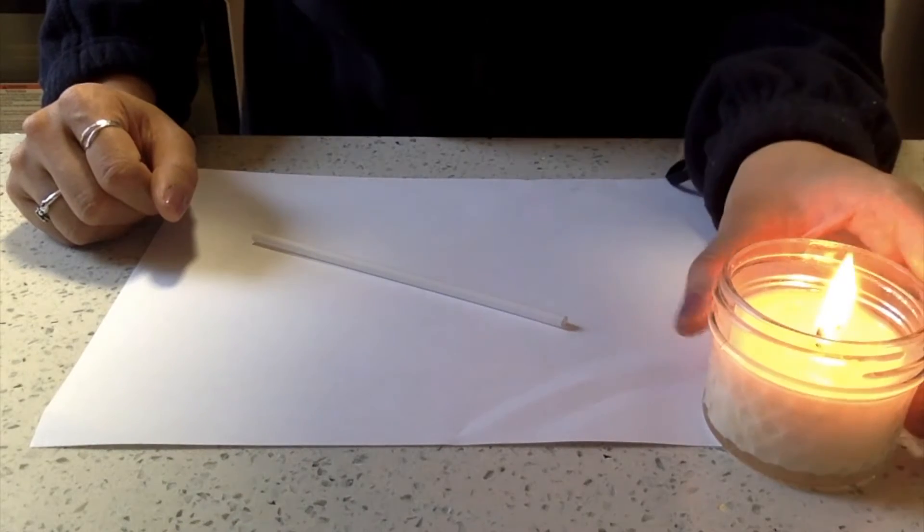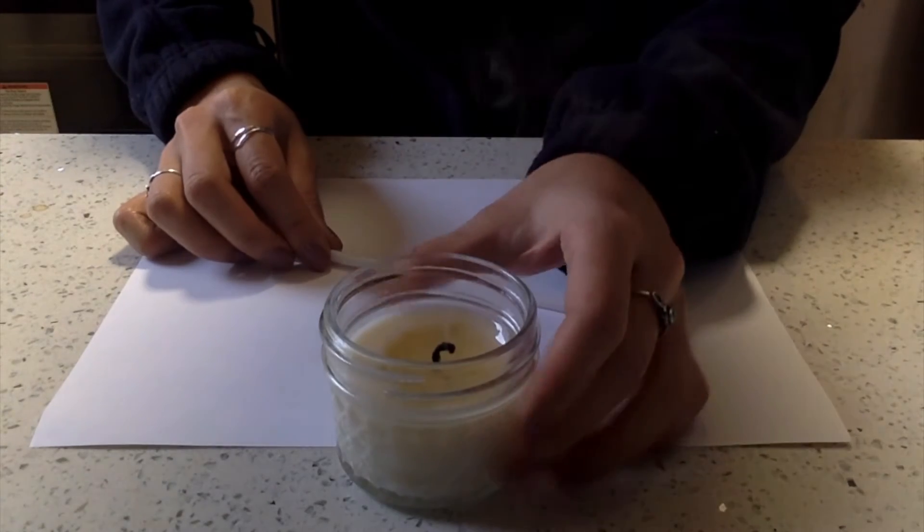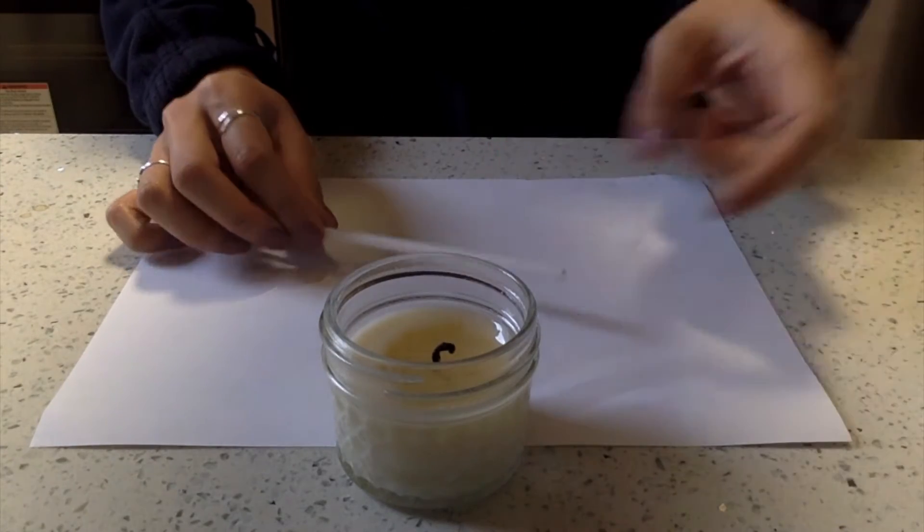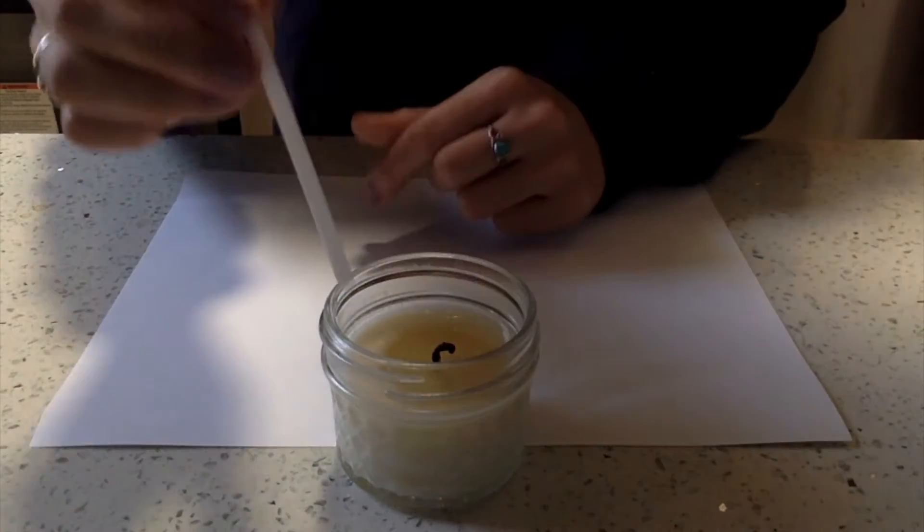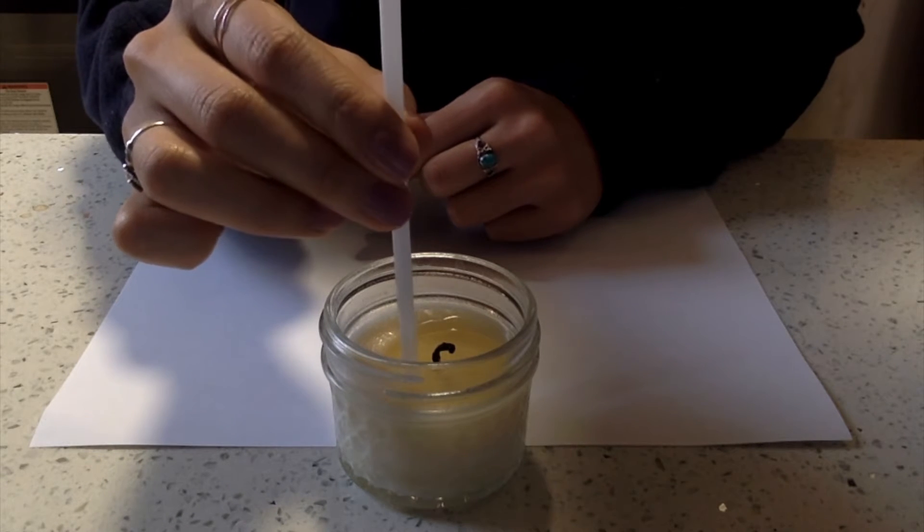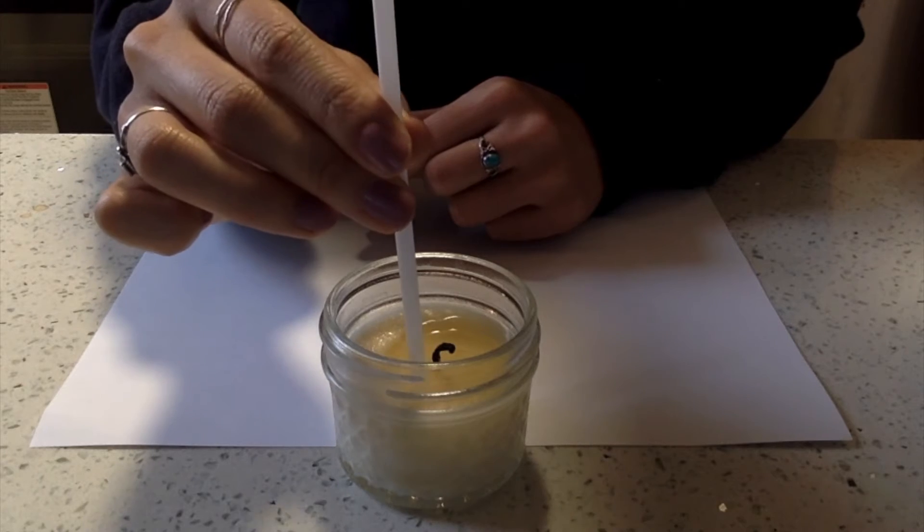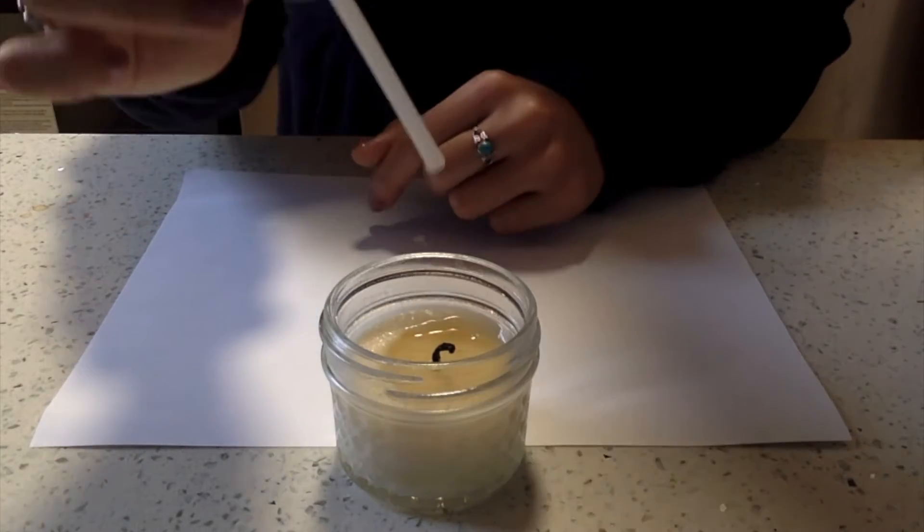Once the candle has been burning for a while and you can see that it has melted some of the wax, you can blow it out and dip one end of the straw into the melted wax. I like to do this several times so there are multiple layers of wax at the end of the straw to completely seal it.